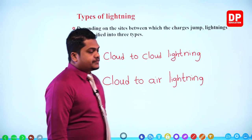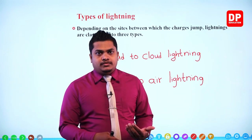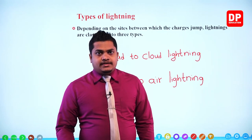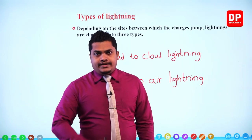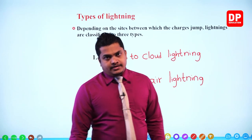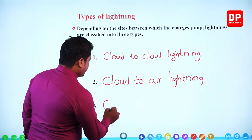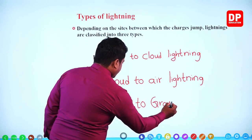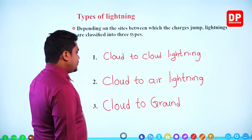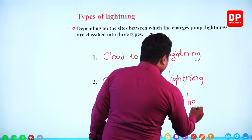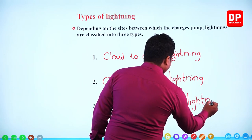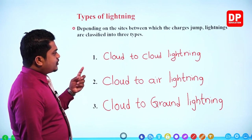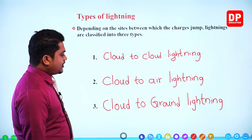Then the third one: lightning can occur from a certain cloud to the ground. This is called cloud to ground lightning. So number one is cloud to cloud lightning, second is cloud to air lightning, and number three is cloud to ground lightning.